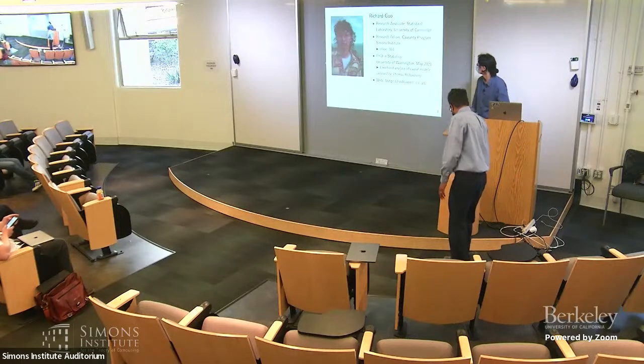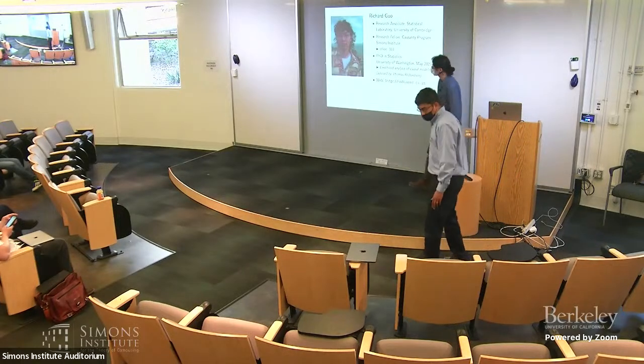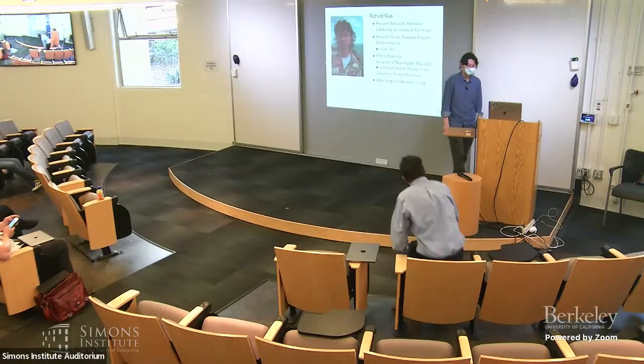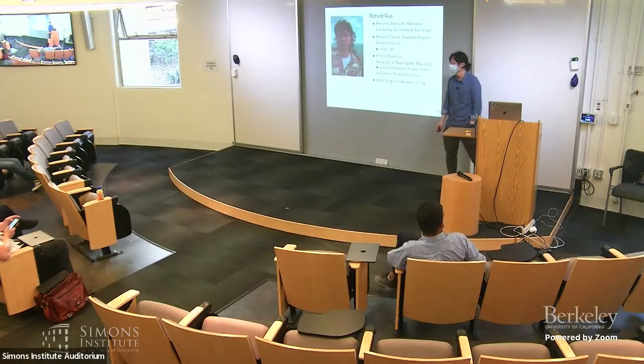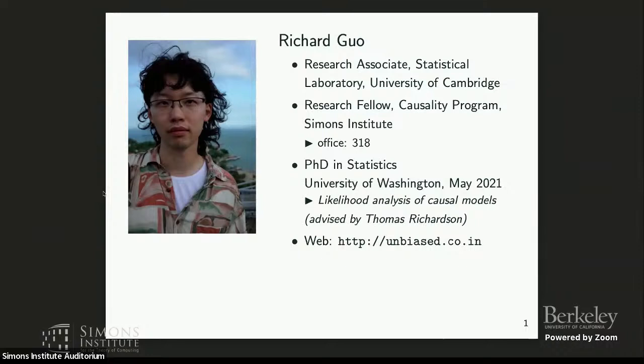All right, thank you. So my name is Richard Gough. I'm a research associate with the Institute of Laboratory at University of Cambridge. In the meantime, I'm a research fellow here at Simmons, my office is 318. I got my PhD in statistics from the University of Washington last year, and my thesis was about likelihood analysis of causal models.